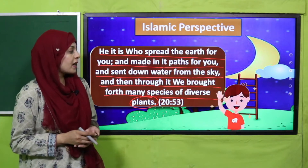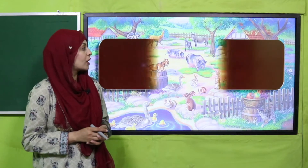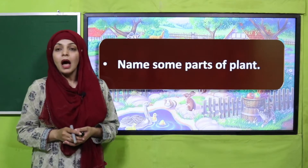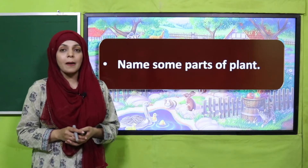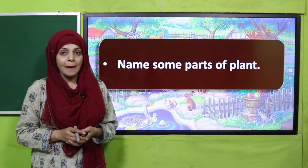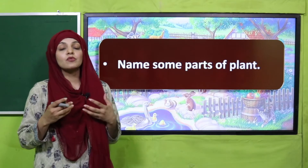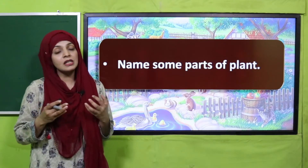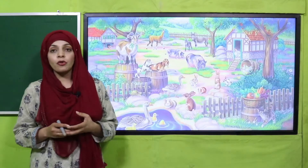Now let's move to the pre-reading question. Quickly answer and tell me: name some parts of the plant. When you see different plants around you, name some parts. For example, leaves, stem, roots — these are some names of parts of plants. Besides these, fruits and flowers are also parts of a plant.